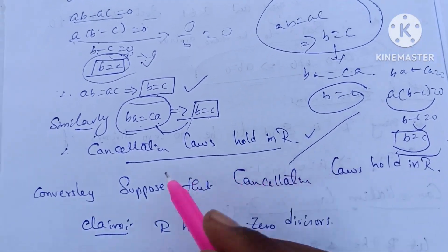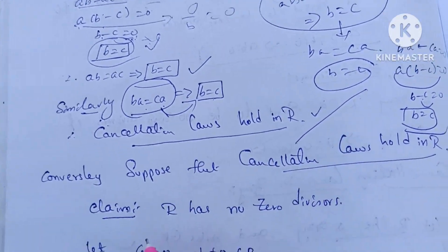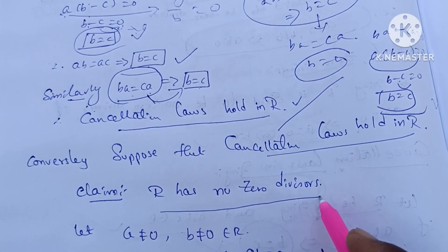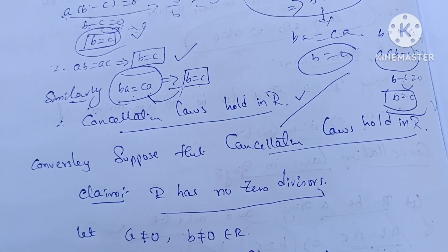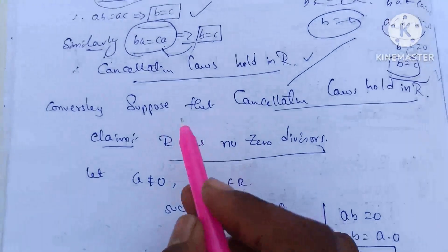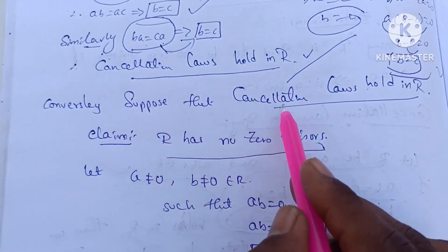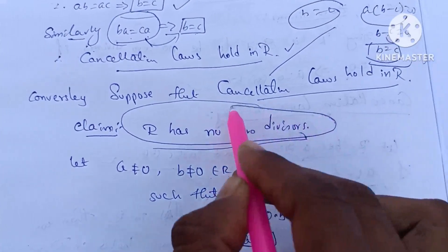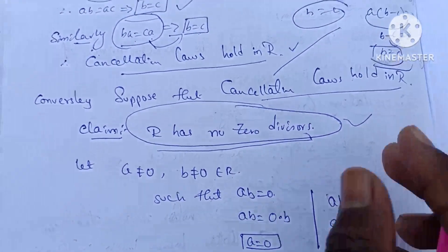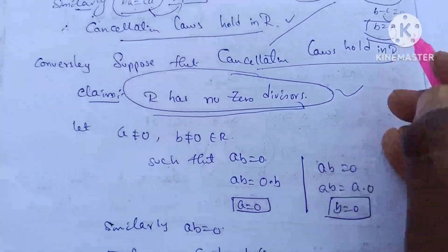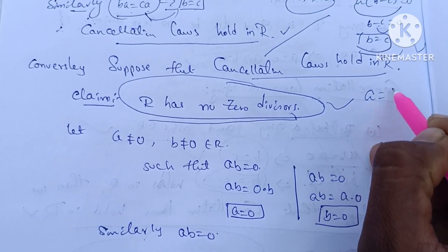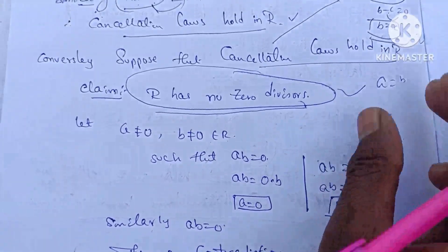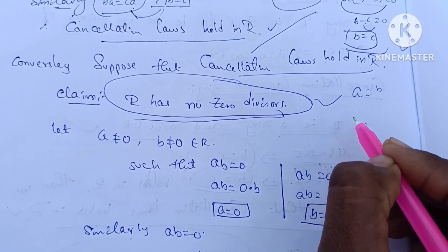The second step is: let me show the cancellation laws prove the details — R has no zero divisors. Without zero divisors, we have to prove it. Conversely, suppose that cancellation laws hold in R, then R has no zero divisors. We have to write: suppose AB equals zero.